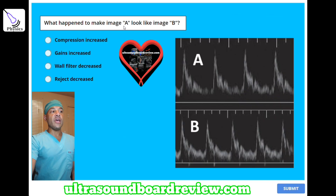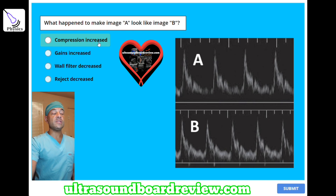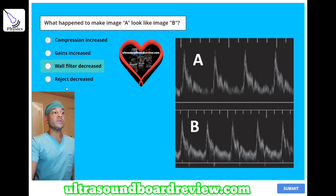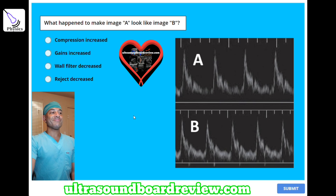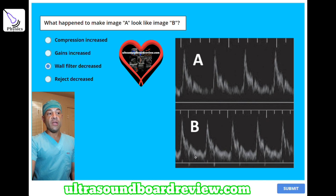What happened to make image A look like image B? A) compression increased, B) gains increased, C) wall filter decreased, or D) reject decreased? The answer is C, wall filter decreased, to fill in the area right near the baseline.